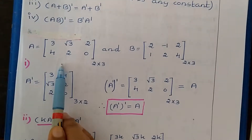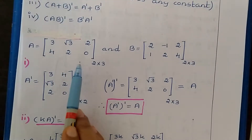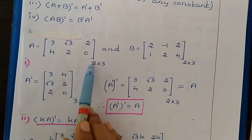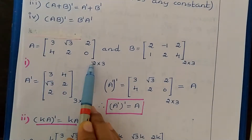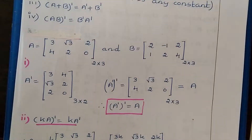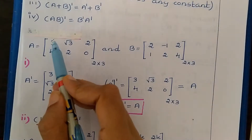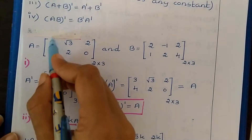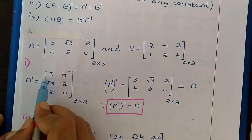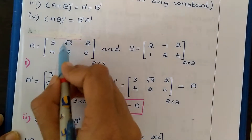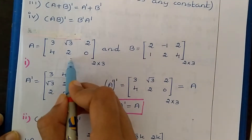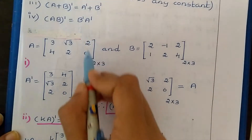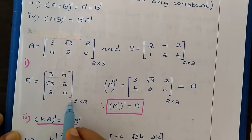I have taken matrix A with elements 3, √3, 2, 4, 2, 0. To find the transpose of this matrix, we interchange rows with columns. I am taking each column and writing it as a row. First column 3, 4 becomes first row. Second column √3, 2 becomes second row. Third column 2, 0 becomes third row. So we have 3 rows and 2 columns.